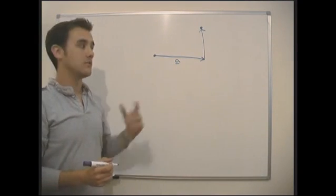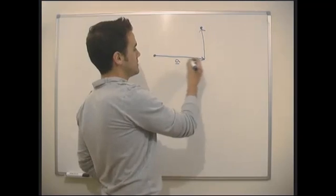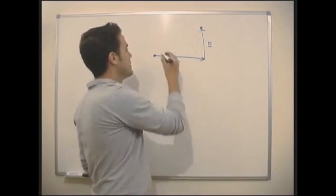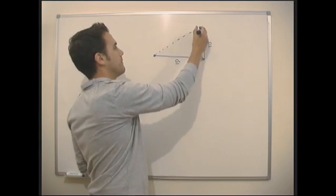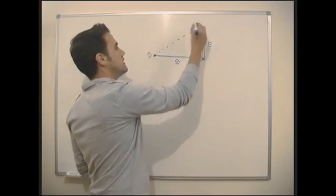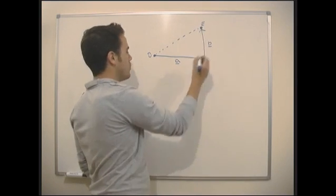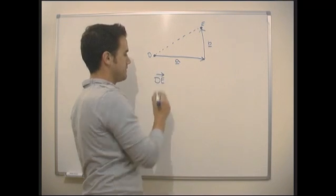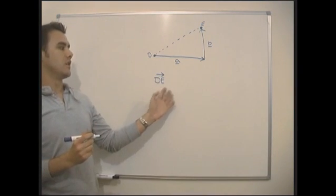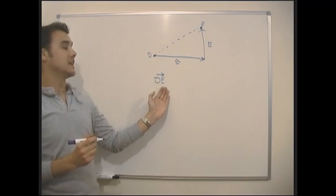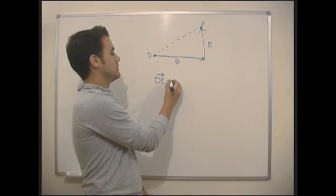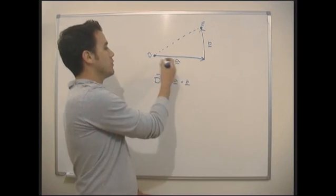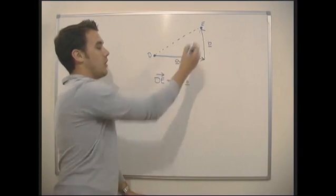We denote vectors by a letter with a line underneath it — you might see some other notation as well, but that's effectively how we do it — and then b here. So how do I actually get from point D to point E? That's how we denote a vector — effectively the vector D to E. What that will actually equal is a plus b. We want to go along a and along b.